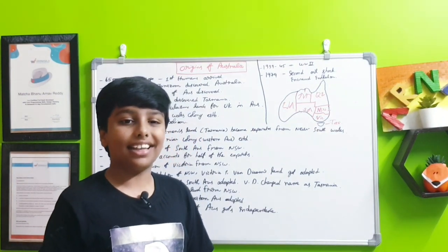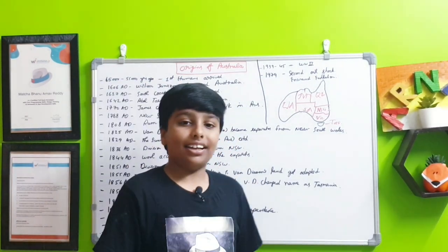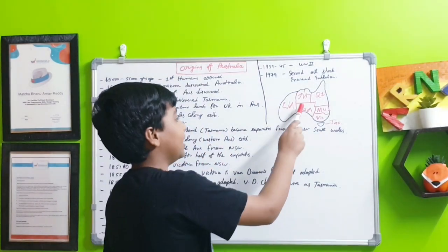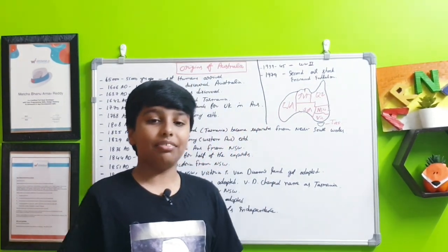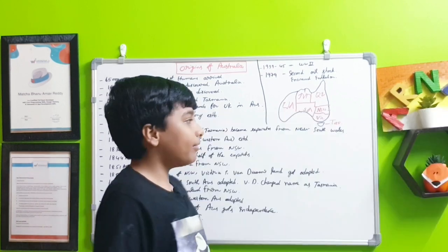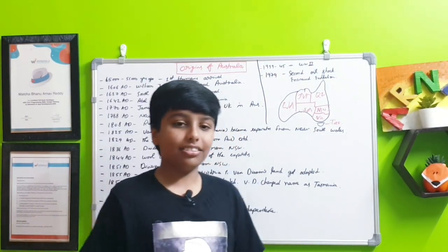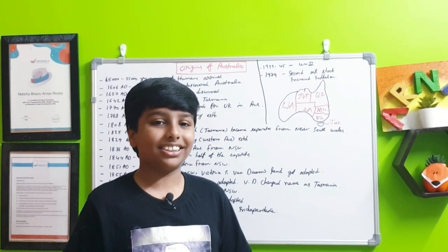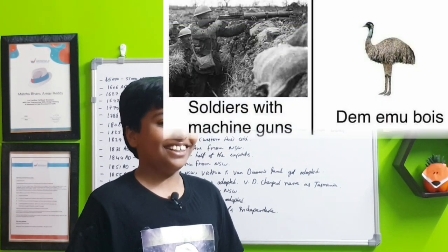While in this time the Emu War happened in 1933. First there were farmers, like retired military generals who became farmers in Western Australia and Southern Australia doing agriculture. The emus came and did some bad stuff. At that time it was the Great Depression so a lot of bad things were happening. Instead of going to the Minister of Agriculture, they went to the Minister of Defense and declared war on the emus.